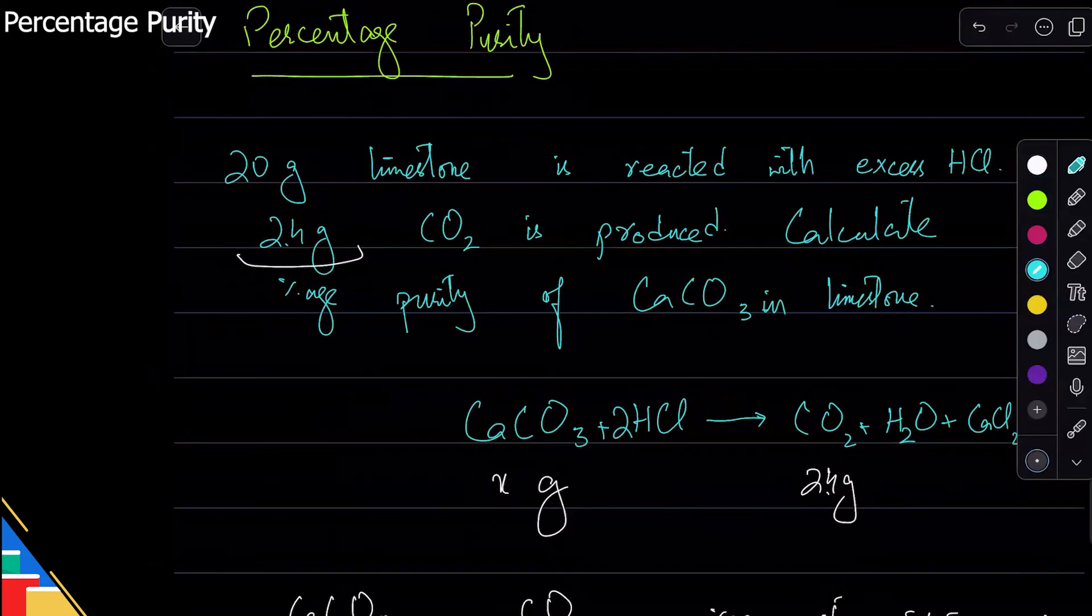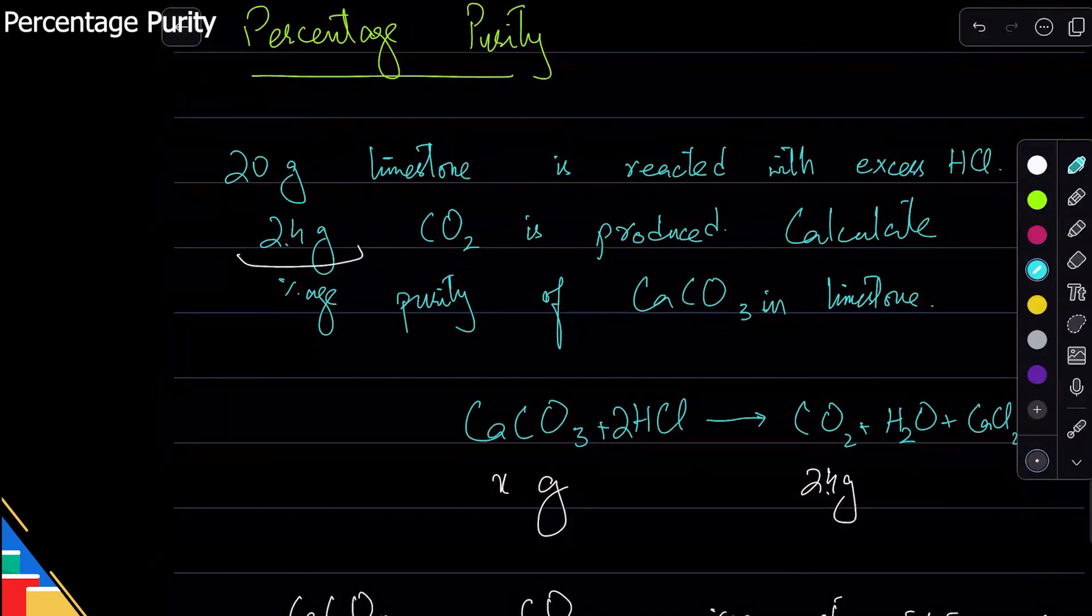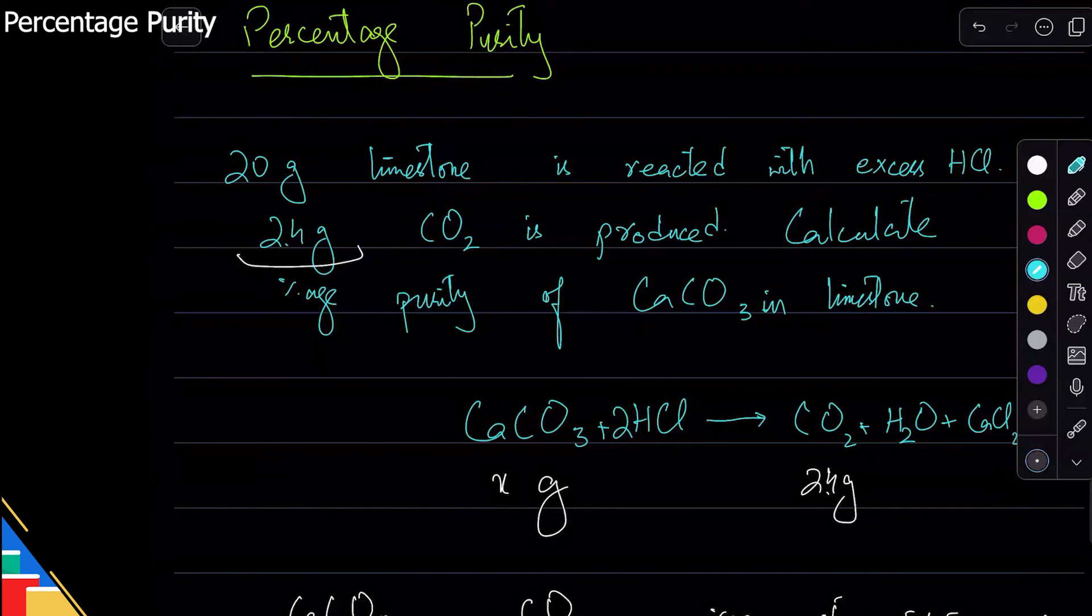Okay, so again the rule for percentage purity and percentage yield is that whatever substance you're looking for, you ignore its value, you calculate the value yourself, and then you apply the formula or ratio to find percentage purity or percentage yield.